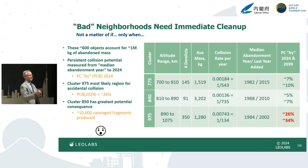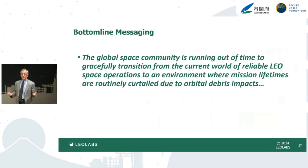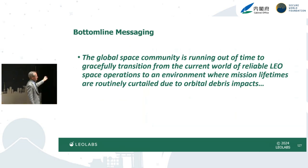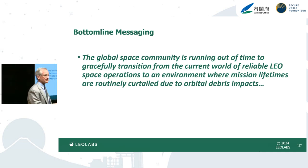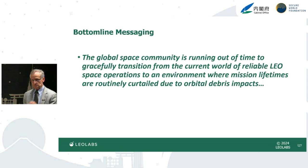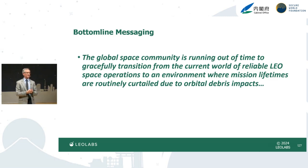These are not one-in-a-million or one-in-a-thousand numbers. These are numbers with percentage signs. By 2039, the number gets worse. The global space community is running out of time to gracefully transition from the current world of reliable LEO space operations to an environment where mission lifetimes are routinely curtailed by orbital debris impacts. I'm not saying we're going to have Kessler syndrome, but we don't have to reach that point to have a concern affecting the space economy. Thank you for your time and attention.